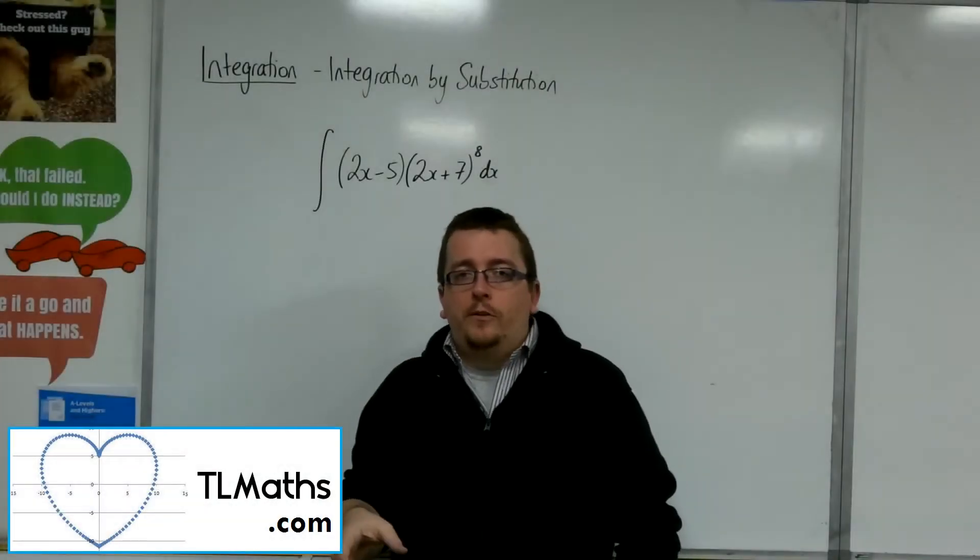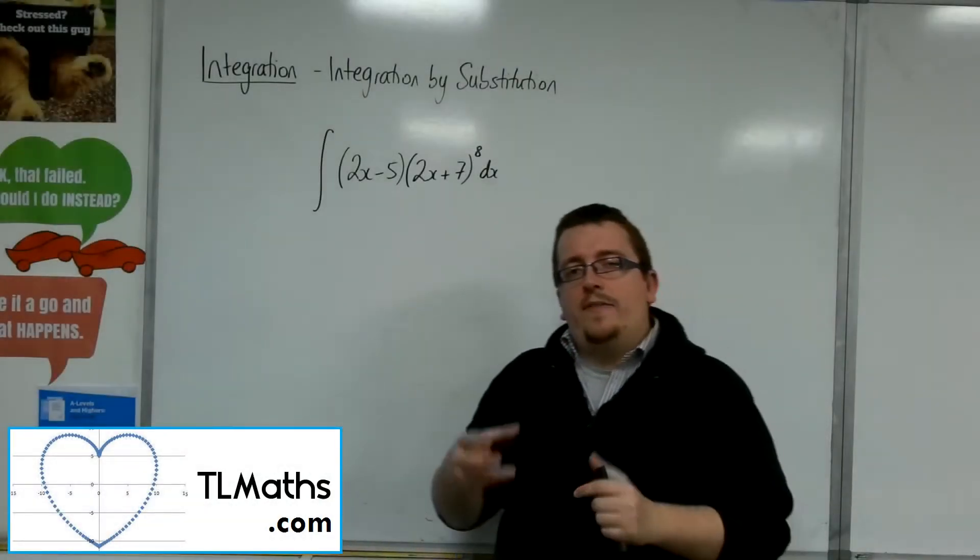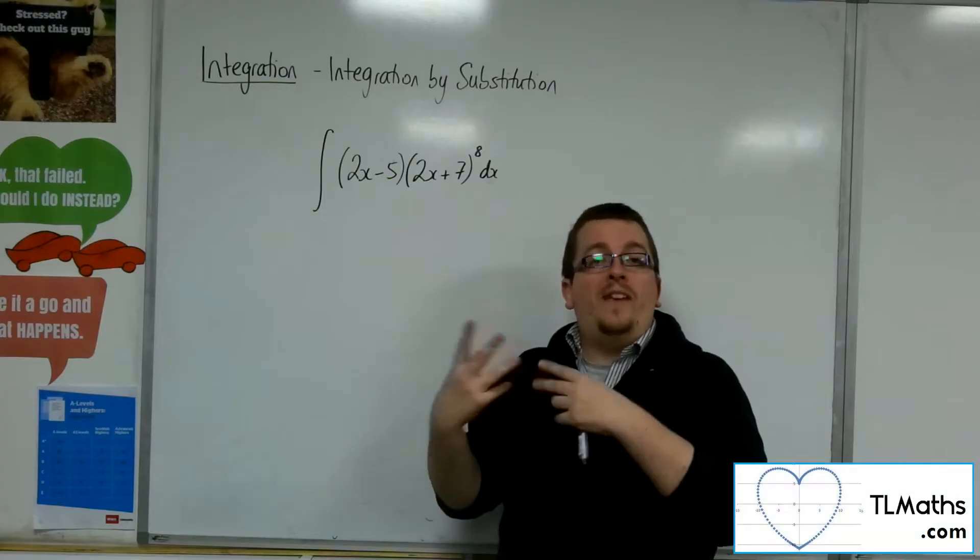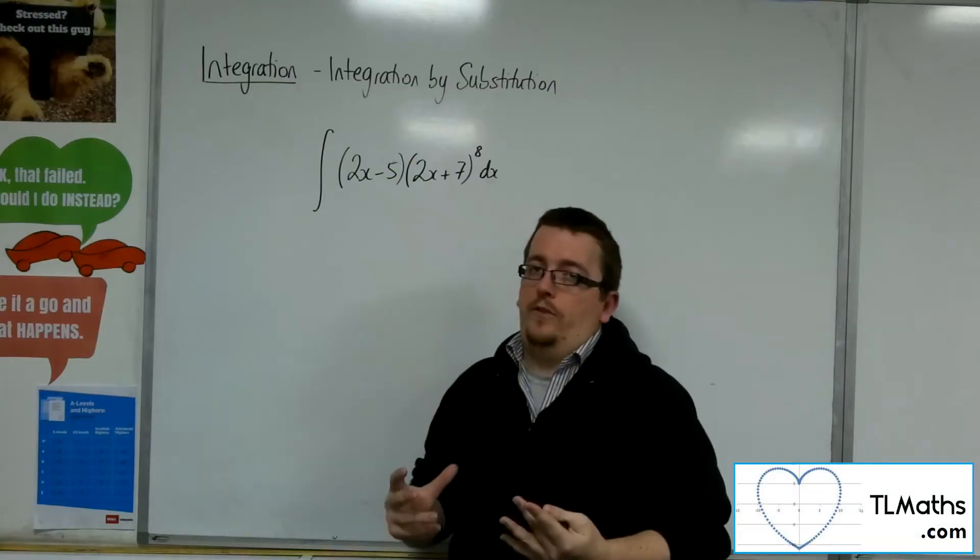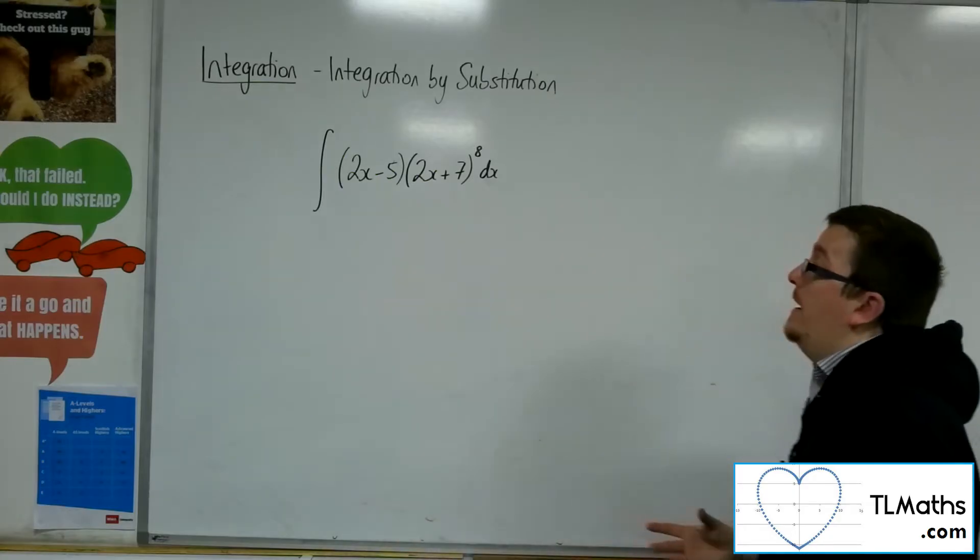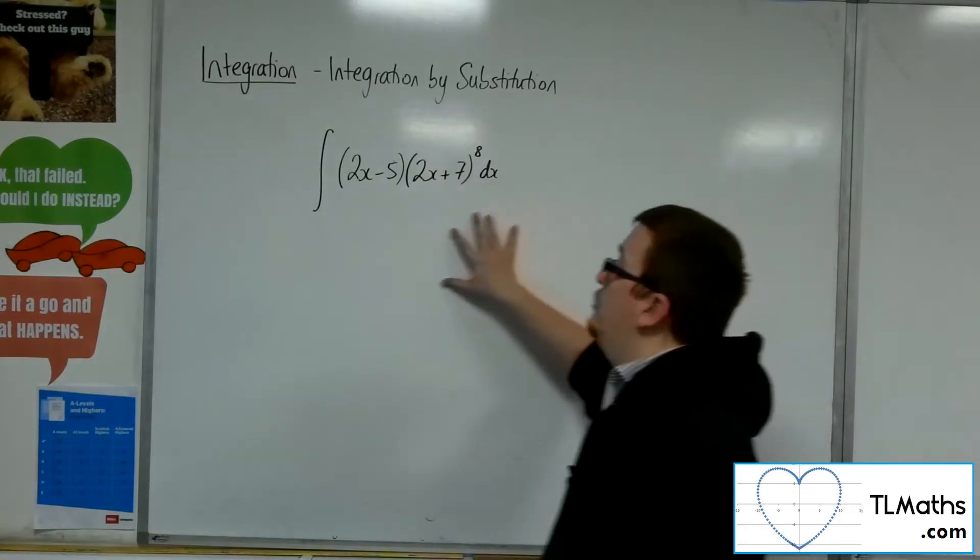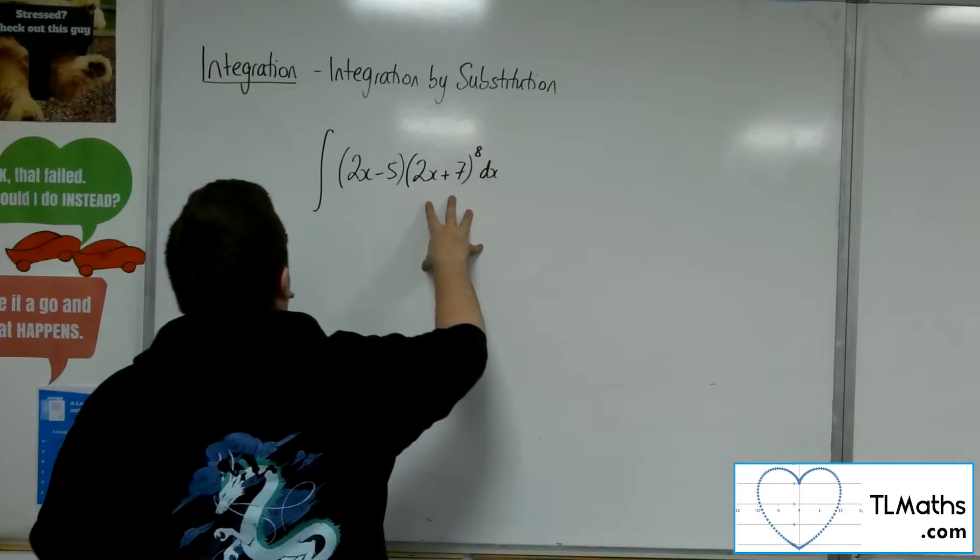In the previous couple of videos, we found that we had this term outside of the bracket that cancels. What if that doesn't cancel? We're going to see an example here with the integral of (2x minus 5) times (2x plus 7) to the 8.